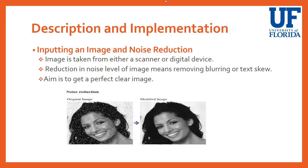Coming to the description and implementation part — how I'm doing the project — the first and foremost thing, as I mentioned in that diagram, is inputting an image and reducing the noise. I'm taking any image from a scanner or a digital device, but it's better to take the image from a scanner to avoid noise. Noise means changes in brightness or contrast, which should be minimized to avoid blurring or text skew effects.